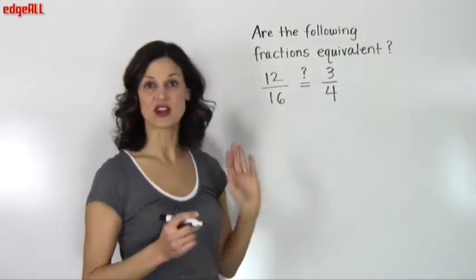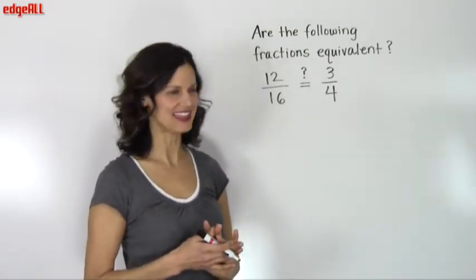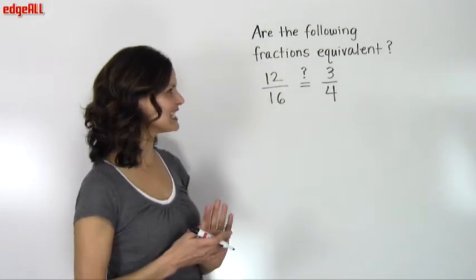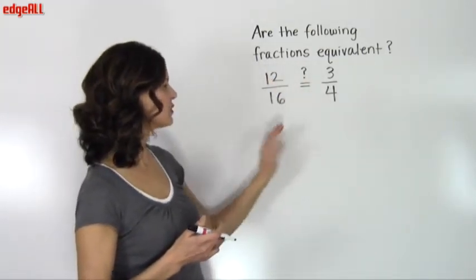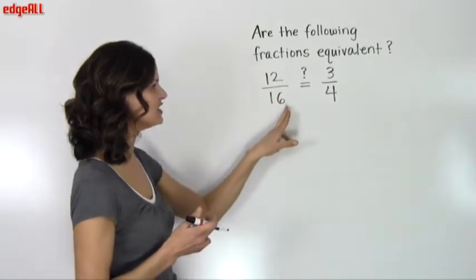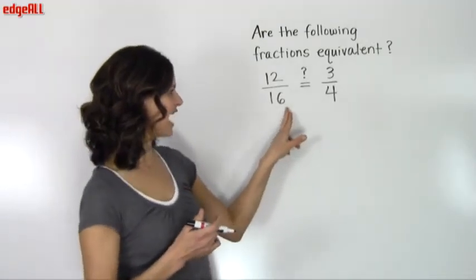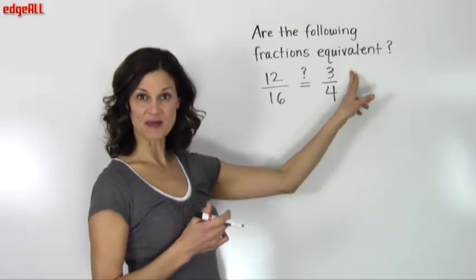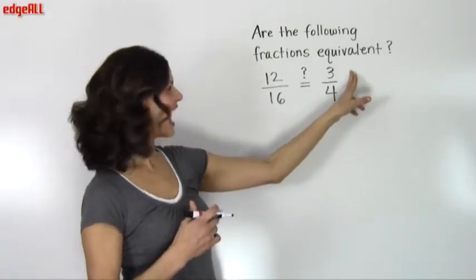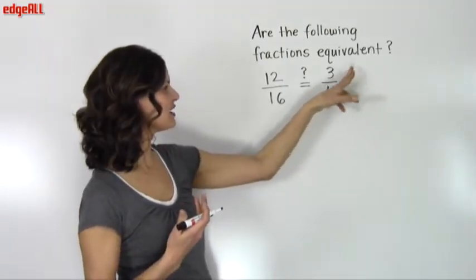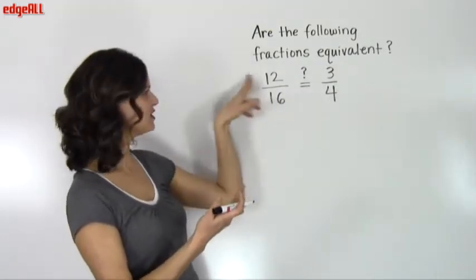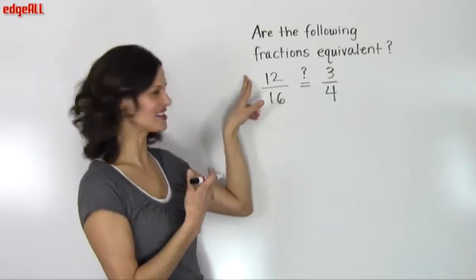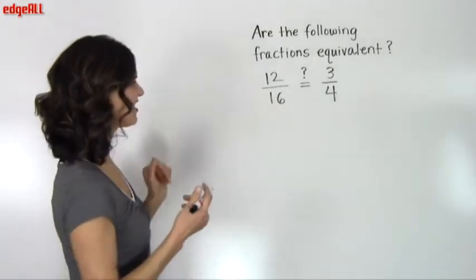What we are going to do in the cross multiplication method is that our first step is going to be to cross multiply. So what you do is you multiply the denominator from one fraction with the numerator from the other fraction. And then similarly, you are going to multiply the denominator of the other fraction with the numerator from the first fraction. So let's get started on doing this.